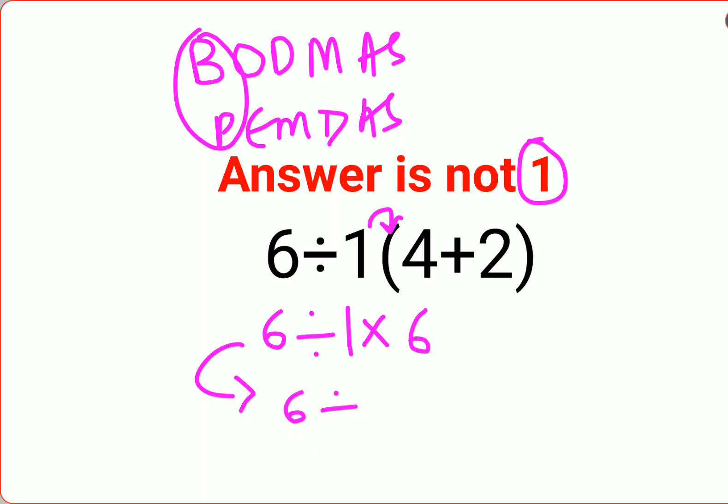This is where a lot of people make a mistake. Please understand: division and multiplication always hold equal precedence. So in sums like these, it is important to follow the pattern of left to right.